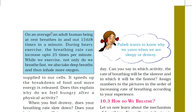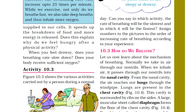On average, an adult human being at rest breathes in and out 15 to 18 times in a minute. During heavy exercise, the breathing rate can increase up to 25 times per minute. While we exercise, not only do we breathe faster, we also take deep breaths and thus inhale more oxygen. After resting for a while, our breathing rate slows down again.